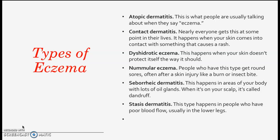Dyshidrotic eczema happens when your skin doesn't protect itself the way it should. Nummular eczema — people who have this type get round sores, often after a skin injury like a burn or insect bite.